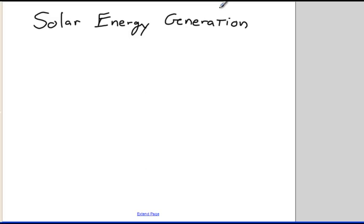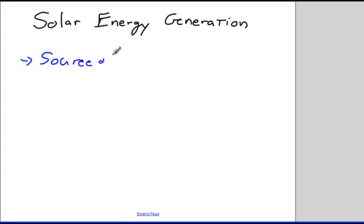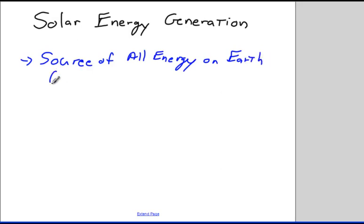What we're going to talk about today is energy generation in the sun. How the sun produces its energy is very important, because the sun is essentially the source of all energy on Earth. This is where almost all energy on Earth comes from.